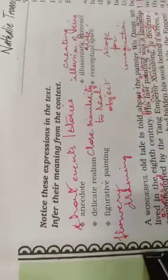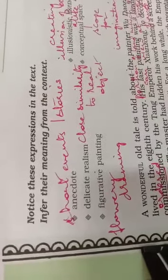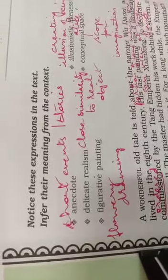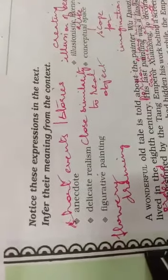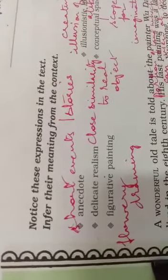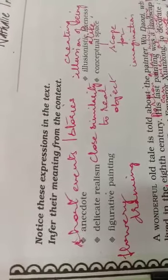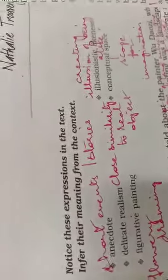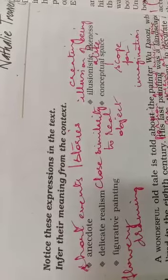Before starting this chapter, let me cover some key expressions from the text. First, 'anecdote' means short events or stories. 'Delicate realism' means close similarity to a real object. 'Figurative painting' is showing people, animals, or objects as they really look. 'Illusionistic likeness' means creating the illusion of being alike.